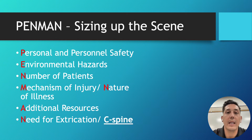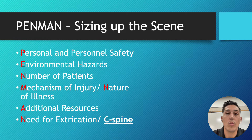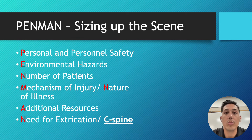Mechanism of injury and nature of illness — your mechanism of injury is going to be how someone got hurt, whether that's being shot, stabbed, or assaulted by other people. That's going to be your mechanism of injury versus your nature of illness.